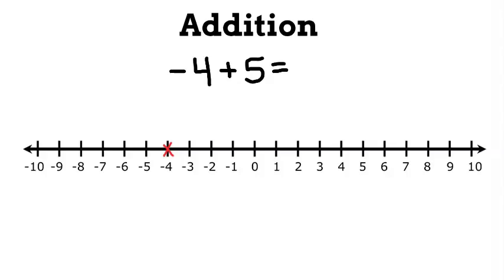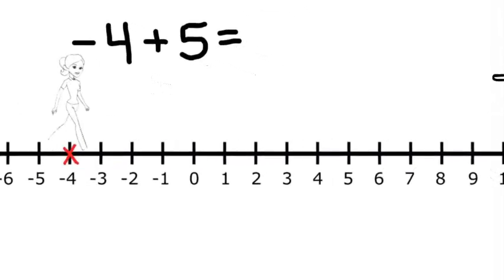Since it's plus, and I know that this is the negative side and this is the positive side, I'm going to put my person facing the positive side. Now, since I'm adding positive 5, I'm going to have her move forward 5 spaces. She ends up at 1. So negative 4 plus 5 equals 1.